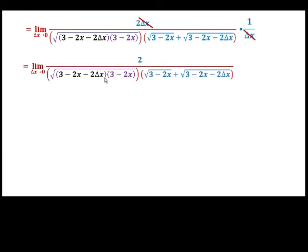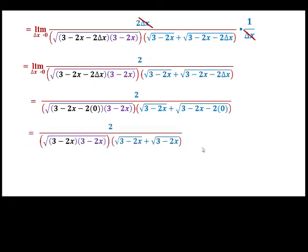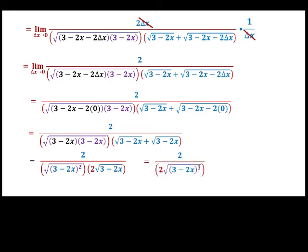This is now the simplified form. We can now evaluate the limit of this function as delta x approaches 0. Substitute delta x with 0 and simplify. Take note that these denominators are quite similar, so we operate them — multiply following the law of exponents. The exponent: 2 plus 1 is 3. Cancel out the common factor. So the derivative is f prime of x equals 1 over the square root of 3 minus 2x, quantity 3 minus 2x cubed.